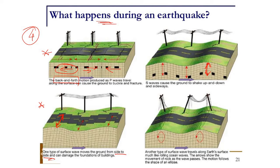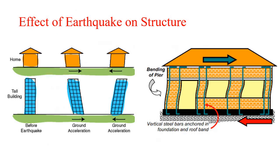The fourth type is the ground rolling like an ocean wave. We are interested in the back-and-forth and side-to-side cases because these are the forms of wave which produce lateral load on any structure, and that is our main interest.